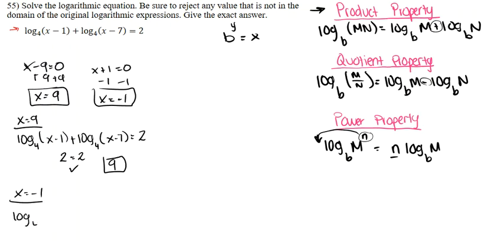Let's test our value x is equal to negative 1. We're going to plug it in. When you plug it in, you get log base 4 of (negative 1 minus 1) plus log base 4 of (negative 1 minus 7) is equal to 2. Let's go ahead and plug that into our calculators as well.